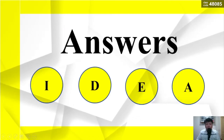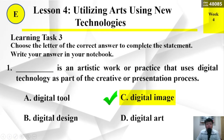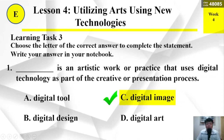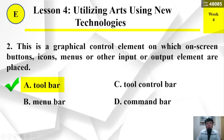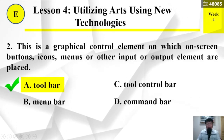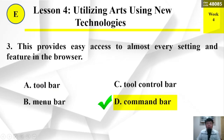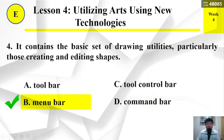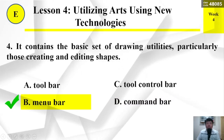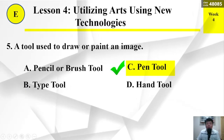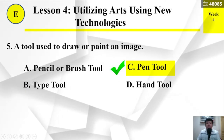Here are the answers. Number 1: The correct answer is D, Digital art. Number 2: The answer is A, Toolbar. Number 3: The correct answer is D, Command bar. Number 4: The correct answer is C, Tool control bar. Number 5: The correct answer is A, Pencil or brush tool.